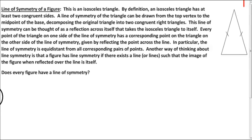So here's a more formal definition of a line of symmetry. Essentially, if you have a point on one side of the line of symmetry and its corresponding point on the other side, they must be equidistant from the line of symmetry. So if we're looking at this isosceles triangle, where would we draw the line of symmetry?